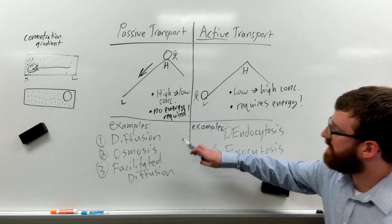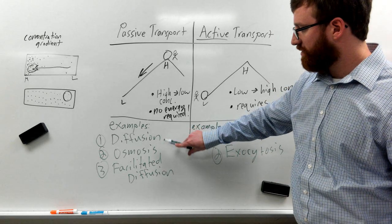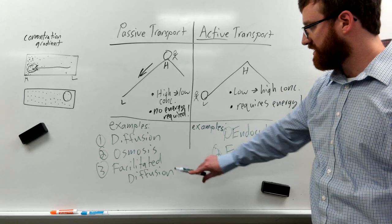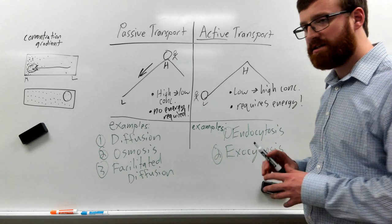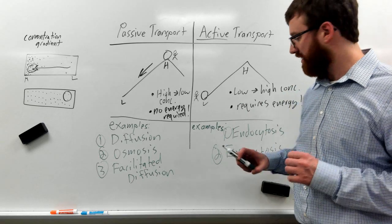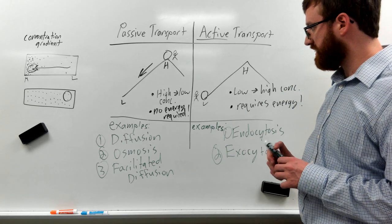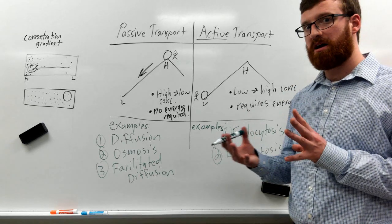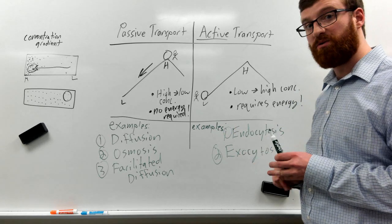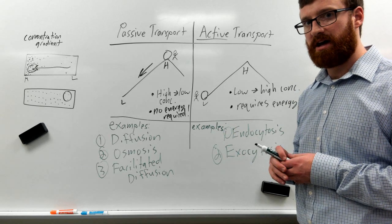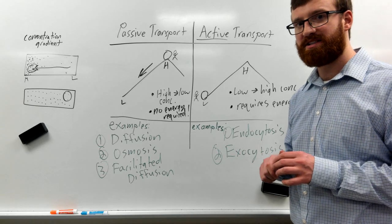So a good way to study would be to go through examples of diffusion, osmosis, facilitated diffusion, endo- and exocytosis. So endocytosis, things are entering the cell. Exocytosis, things are leaving the cell. And those are usually bigger molecules that the cells either really need or need to get rid of, and it requires lots of energy. Hope this helps. Thanks.